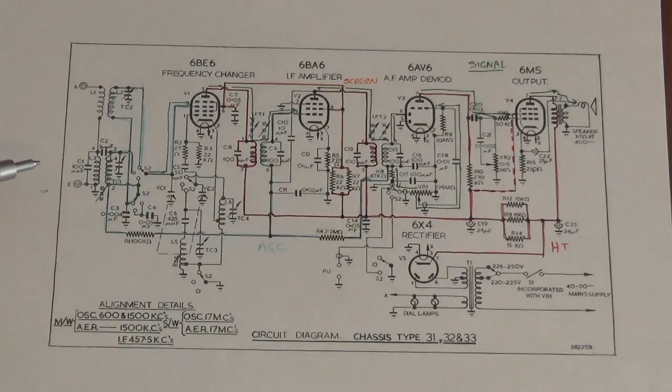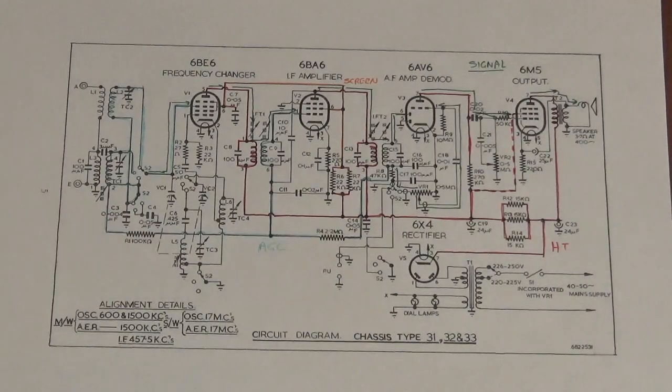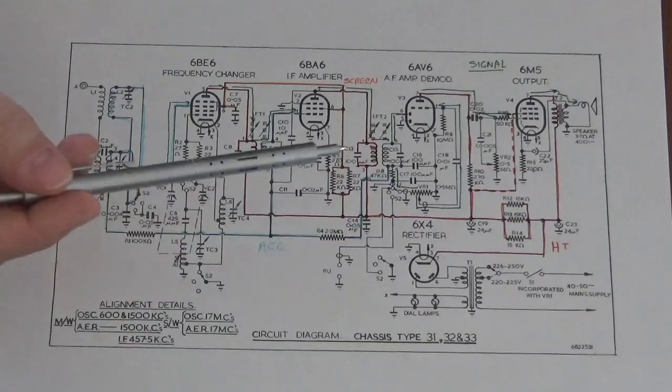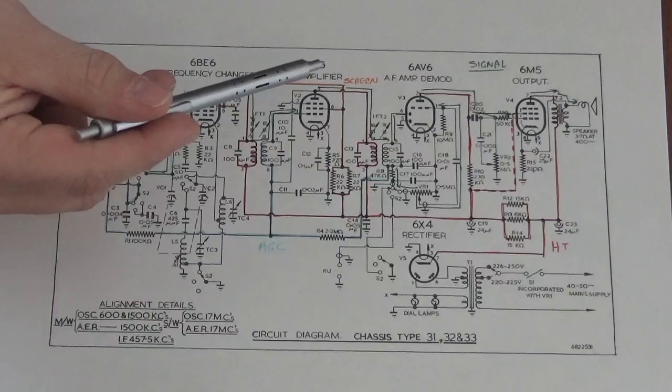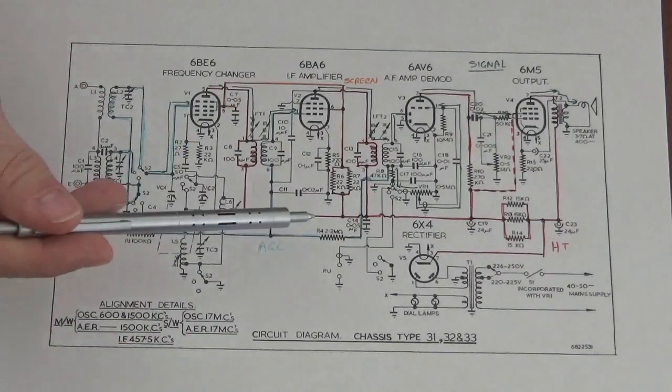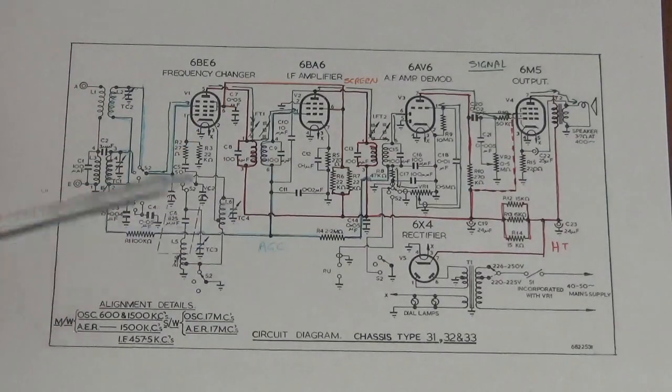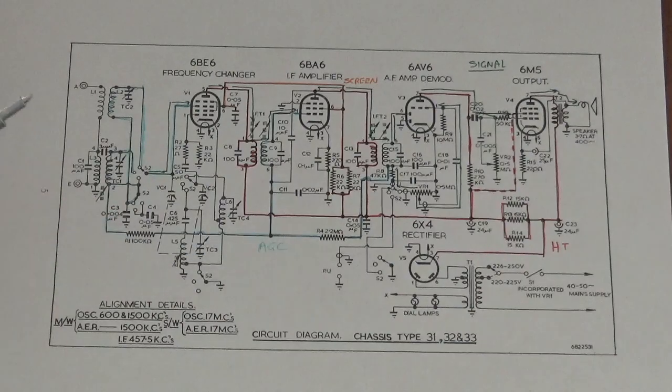I've printed out the circuit here to take a look at it and highlighted some of the wiring to make things easier. In red I've highlighted the HT, in orange the secondary HT used for the screens, in light blue the AGC signal which we'll talk about later, and in green the basic signal path through the circuit.